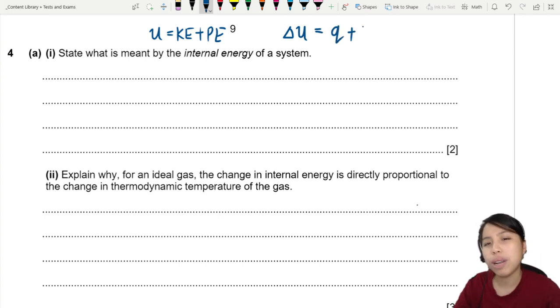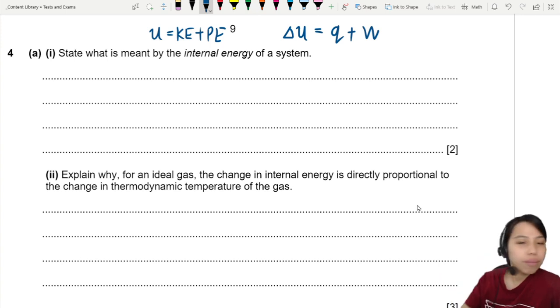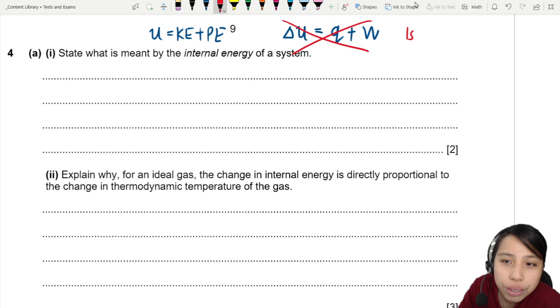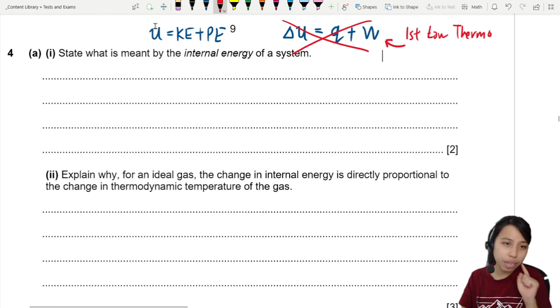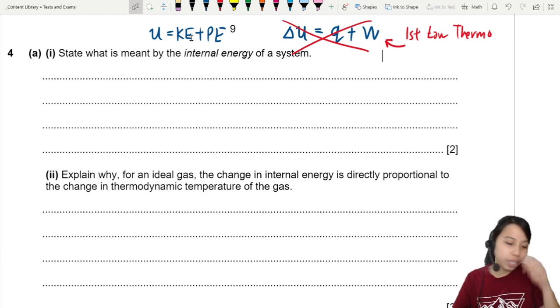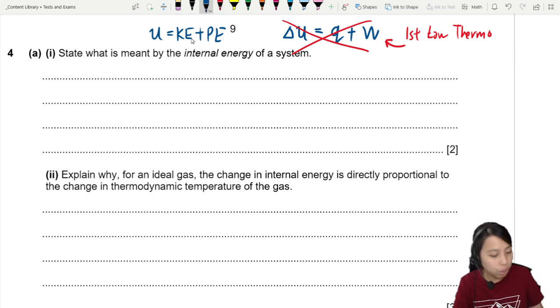U equals to Q plus W. That one also internal energy? No, no, no, no. This one is the first law of thermodynamics. If they ask you to define the first law of thermodynamics, then you talk about that. If they just say internal energy, you gotta talk about definition. Inside a gas, a liquid, has kinetic energy and potential energy, there is a random distribution. So that's what we got to mention.